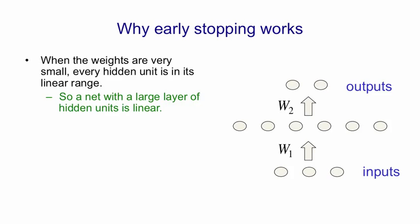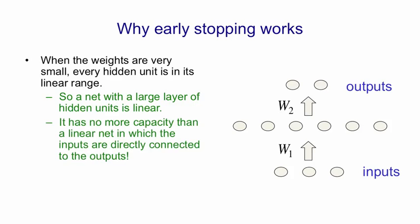And provided the weights are small, a net with a layer of logistic hidden units will behave pretty much the same as that linear net provided we also divide the weights in the linear net by four to take into account the fact that when there's hidden units there in their linear region they have a slope of a quarter. So it's got no more capacity than the linear net.